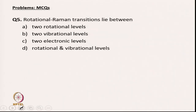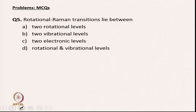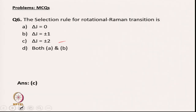The next question asks where rotational Raman transitions lie. The answer is between two rotational levels. Following that, the selection rule for rotational Raman transition is asked. The options are ΔJ = 0, ΔJ = ±1, ΔJ = ±2, or both A and B. The answer is ΔJ = ±2, which is option C, as discussed in detail in the rotational Raman lecture.